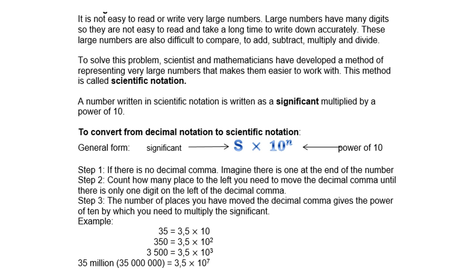It is not easy to read or write very large numbers. Large numbers have many digits, so they are not easy to read and take a long time to write down accurately. These large numbers are also difficult to compare, to add, to subtract, to multiply, and to divide. To solve this problem, scientists and mathematicians have developed a method of representing very large numbers that makes them easier to work with.